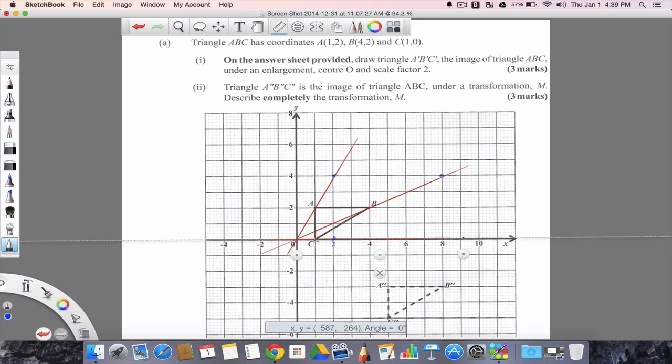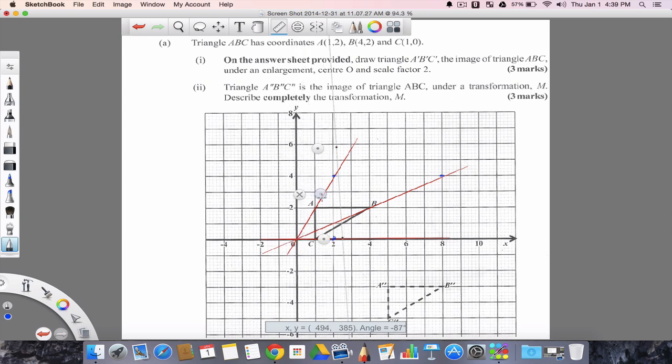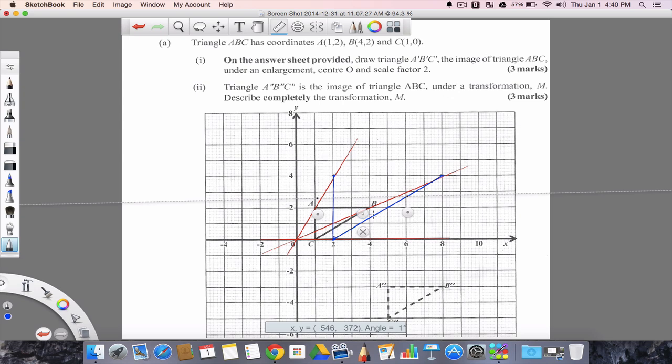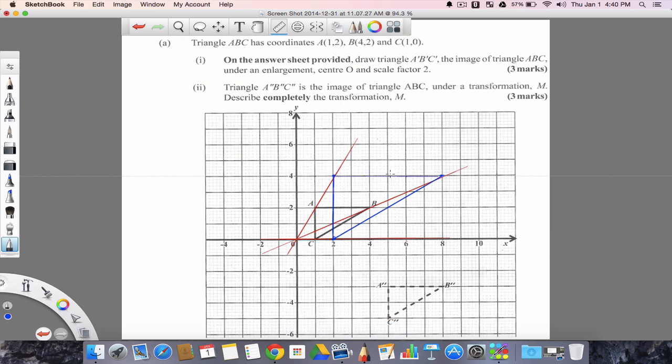So now that you have your points, we can easily draw our triangle representing the enlargement. So starting from here. That's there. All right. And now. All right. So we have our enlargement triangle. So A prime, B prime, C prime. So here you have it.